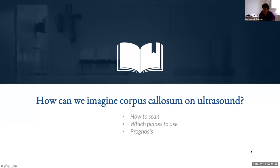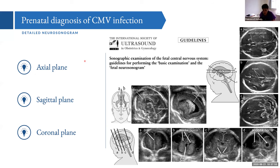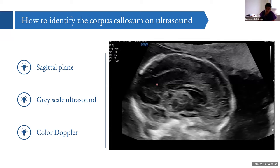Which planes should we achieve in order to have proper visualization? It is not possible to have a direct look at the corpus callosum using the standard axial plane of the fetal brain required by ISUOG. The only way to see the corpus callosum is to obtain a mid-sagittal view of the fetal brain, using multi-planar sonography either by transabdominal or transvaginal approach.